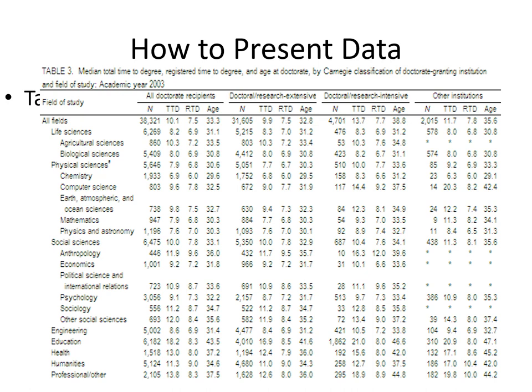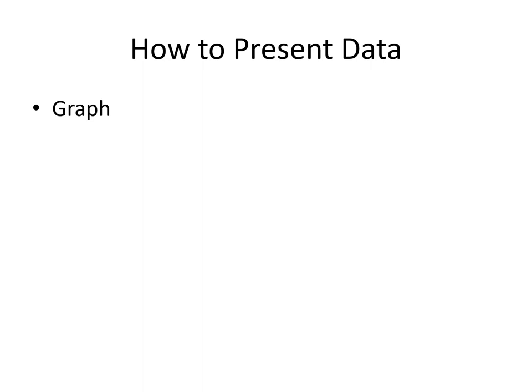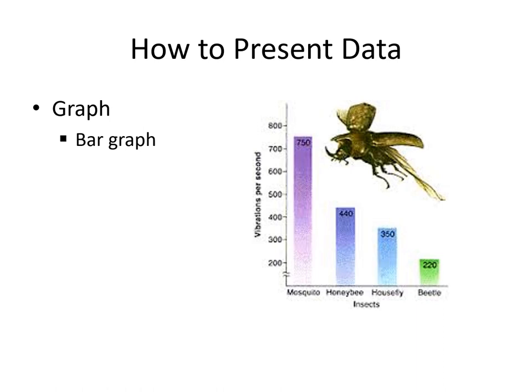There are different types of graphs. The first one, the most simple one, is a bar graph. These are just rectangular bars that you see on a graph, and the longest one would have to have the highest value. So it might take you like 2.3 seconds to realize that mosquitoes have the highest vibrations per second compared to the honeybee, the housefly, and the beetle.